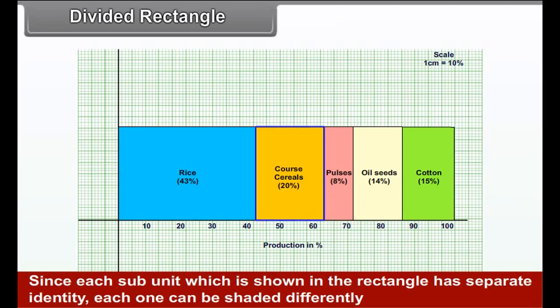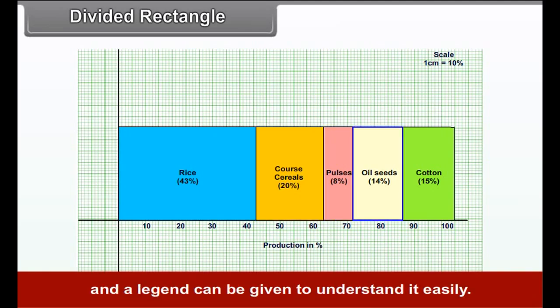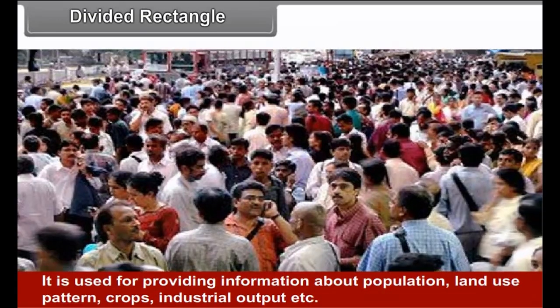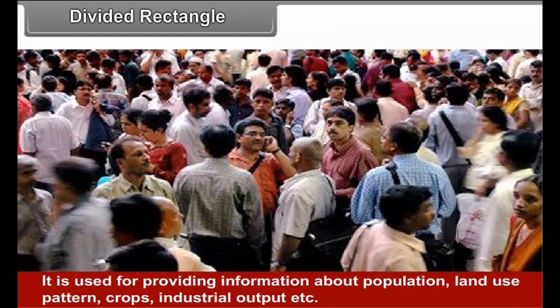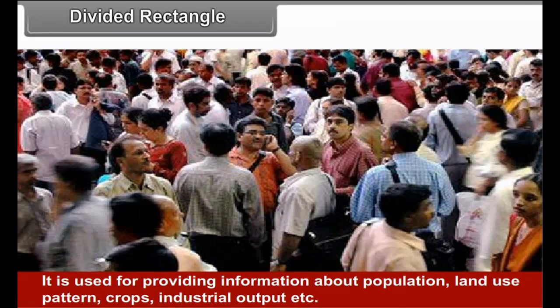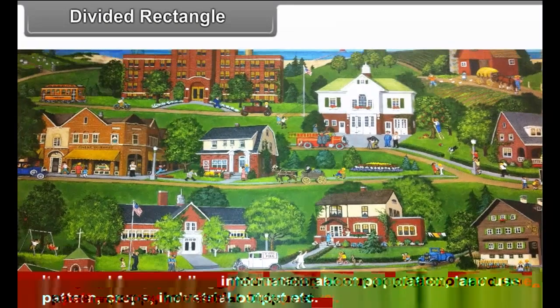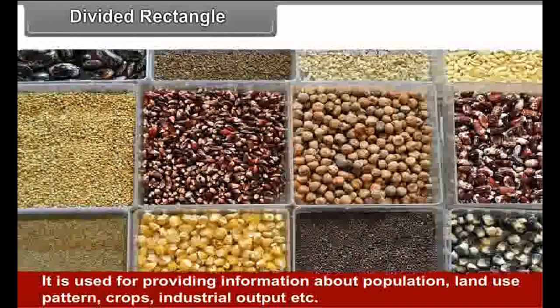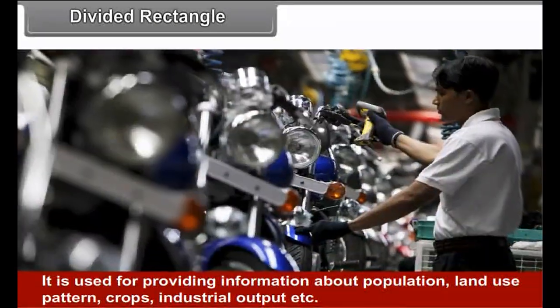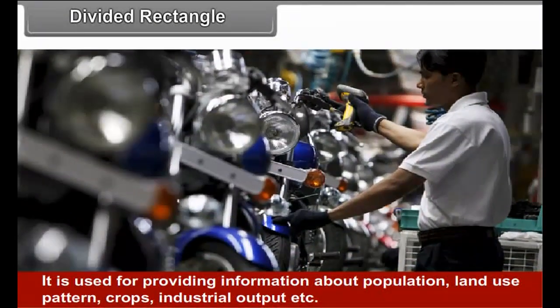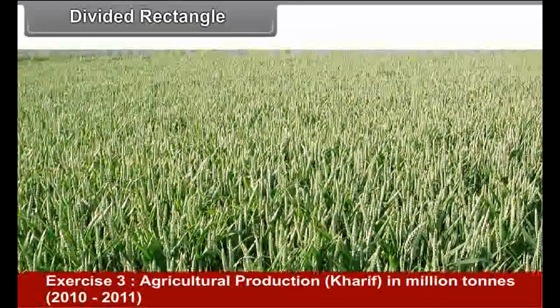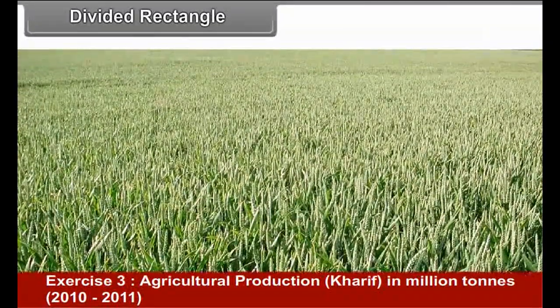Advantages: This method is very useful to compare data and understand the proportion of each sector as a part of the whole. It gives a very good visual impact. Limitation: It gives only one comparative picture looking at the diagram. It is difficult to calculate exact value.